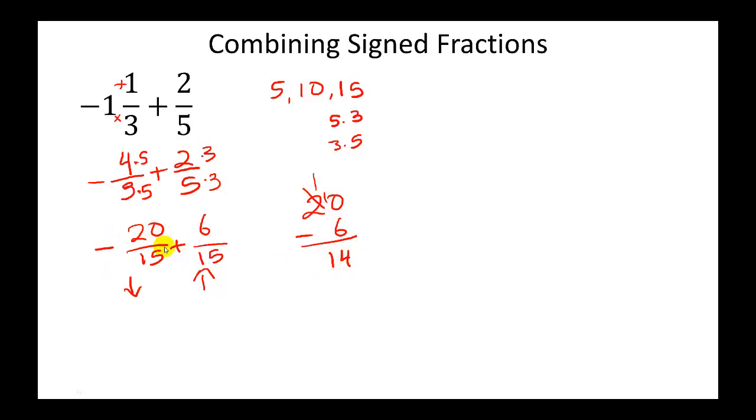Are we going more down or more up? We're going more down, which means our numerator, we get a negative 14, and we bring over the denominator of 15. So negative 14 fifteenths is what we get when we combine these two signed fractions.